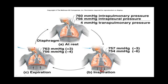When we exhale, we relax our diaphragm and the diaphragm pushes back up while the elasticity of the lung tissue helps them return to their original size. That decreases the volume of the thoracic cavity, increasing the pressure on the air inside the thoracic cavity to a point greater than the atmospheric pressure outside our bodies, which means air is going to move out of our lungs into the atmosphere — and that's exhaling.